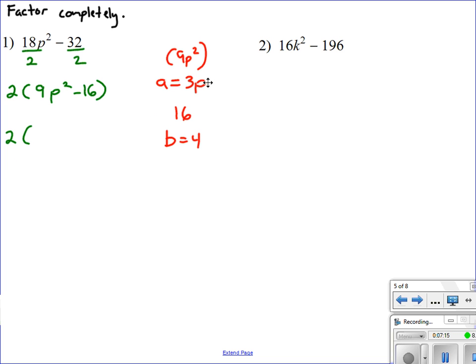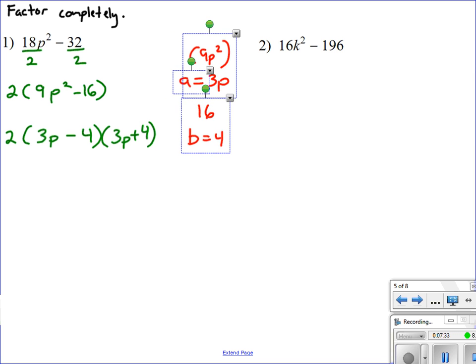So I go ahead and plug that in. 3p, that's a. Minus b is 4. A again, 3p, and this time plus b, which is 4. Okay, and then that'll be your final answer right there. Completely factored. We factor out a common term, or a common multiple, and then factored the leftover.